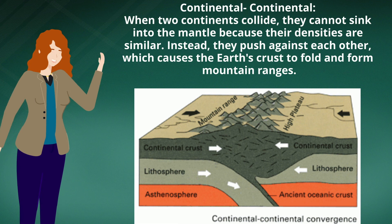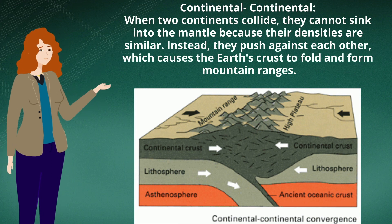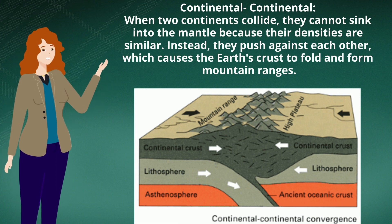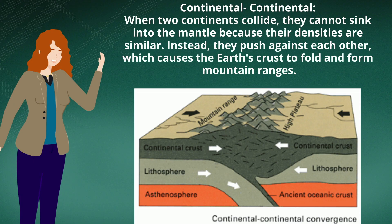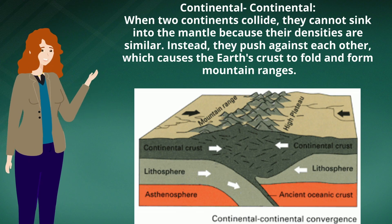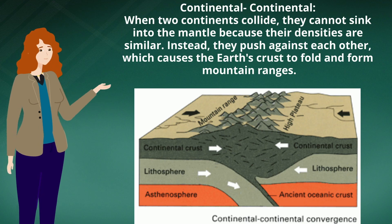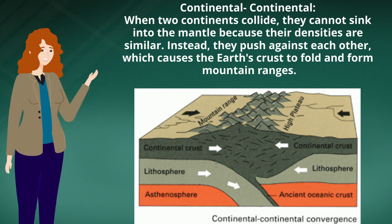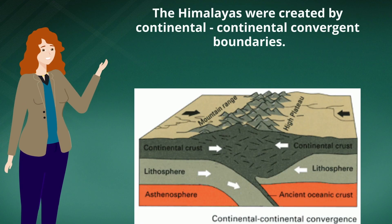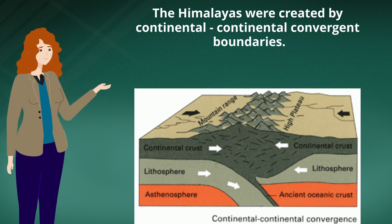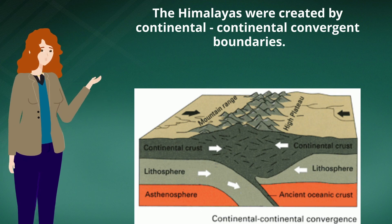When two continents collide, they cannot sink into the mantle because their densities are similar. Instead, they push against each other, which causes the Earth's crust to fold and form mountain ranges. The Himalayas were created by continental-continental convergent boundaries.